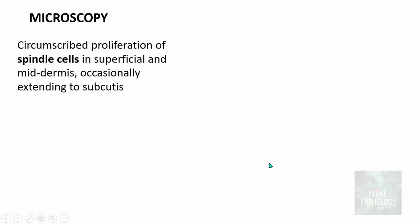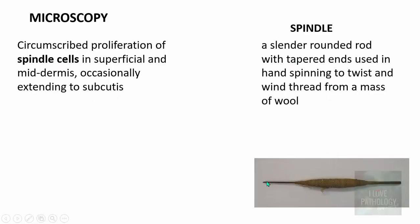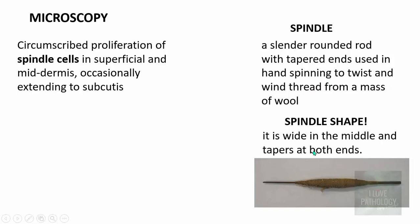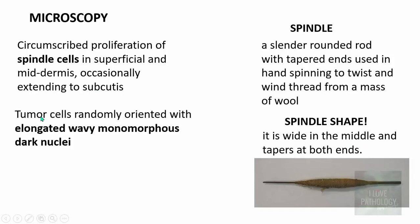Microscopically it's quite simple. They are composed of circumscribed proliferation of spindle cells in the superficial and mid dermis, occasionally extending into the subcutis. Spindle refers to a cell that is wide in the middle and tapered at both ends. These tumor cells in neurofibroma are randomly oriented with elongated wavy monomorphous dark nuclei.